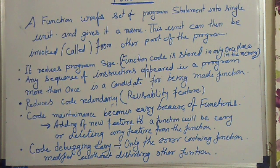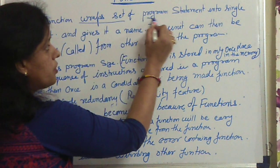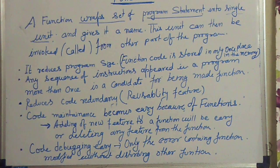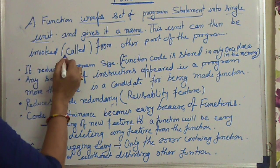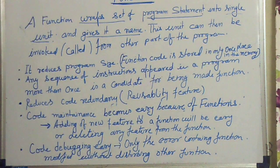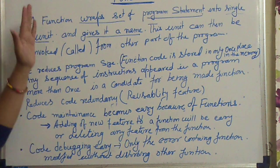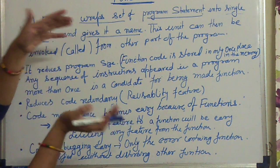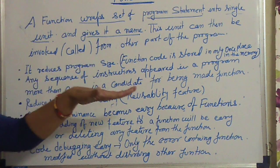A function wraps a set of program statements into a single unit and gives it a name. This unit can then be invoked or called from other parts of the program. We will see how the function wraps statements into a bundle, how names are given to that bundle, and how it is called from different parts of the program.